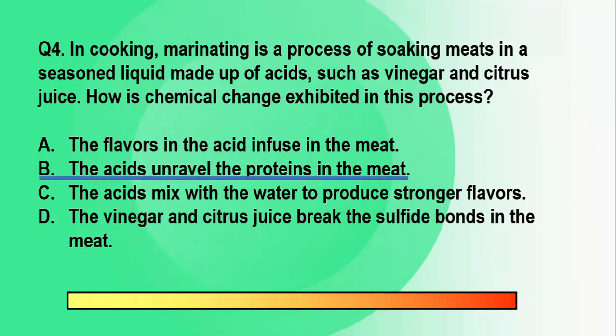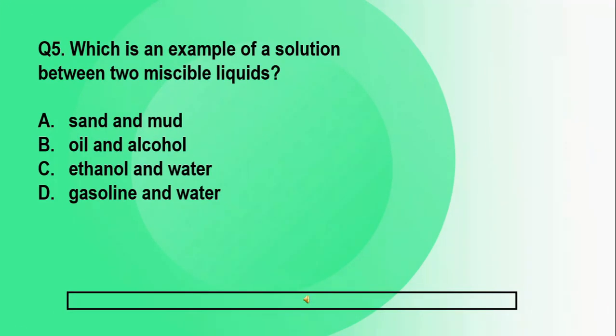Question number five. Which is an example of a solution between two miscible liquids? A. Sand and mud. B. Oil and alcohol. C. Ethanol and water. D. Gasoline and water. The correct answer is letter C, ethanol and water. Miscible means capable of being mixed. You can definitely mix ethanol and water. In fact, rubbing alcohols are usually 70% ethanol and 30% water.